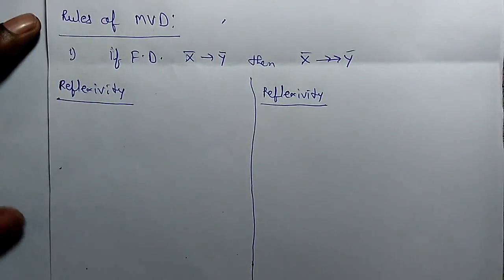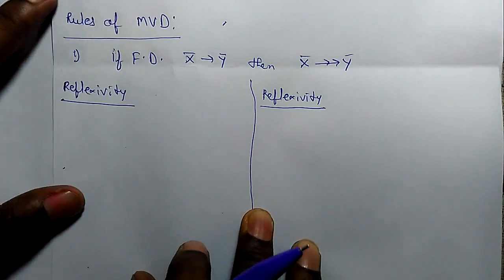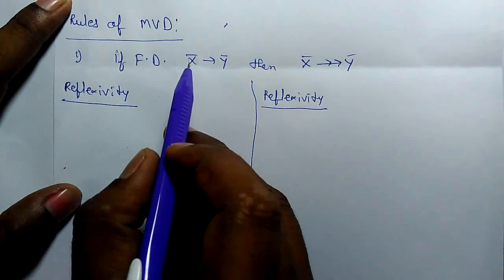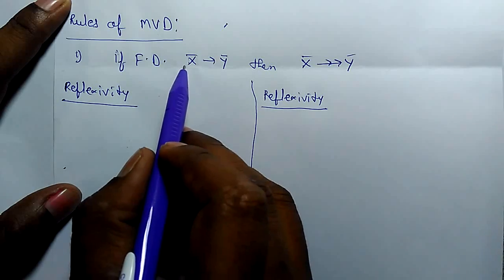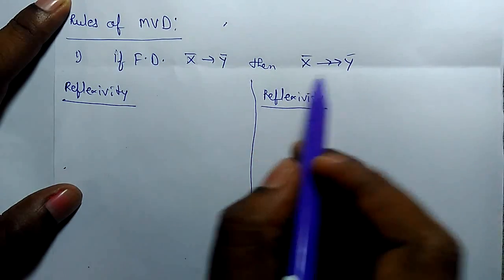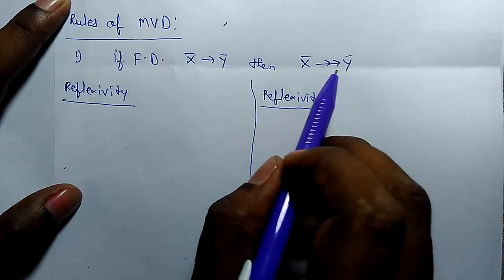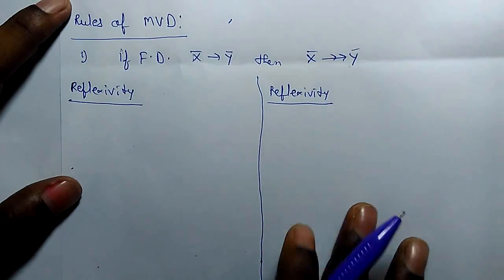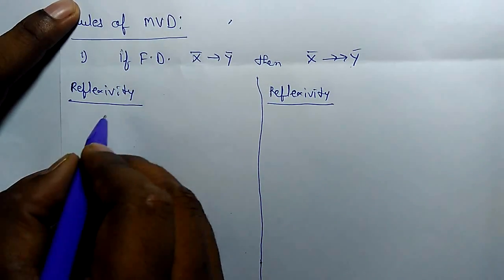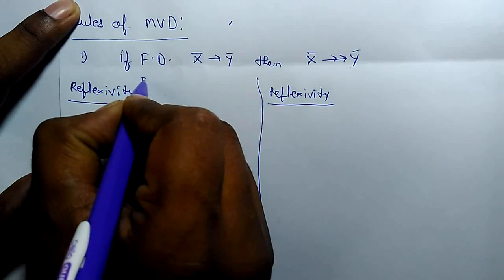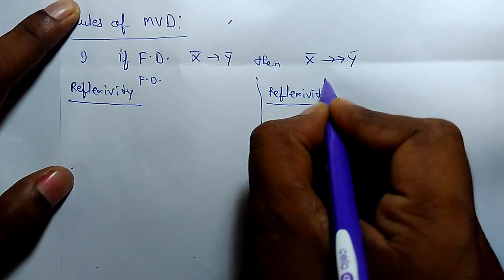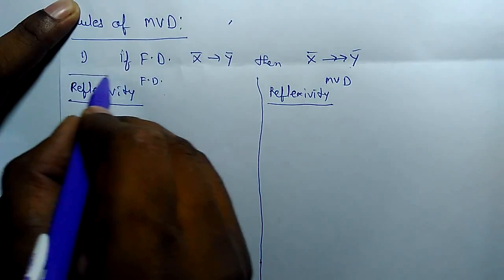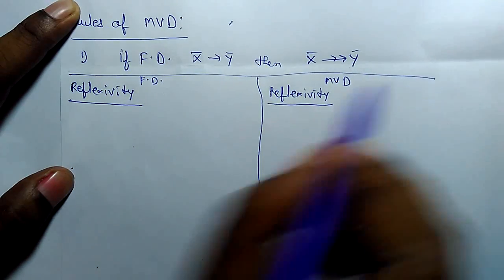The rules of multivalue dependency: for any functional dependency in relation R, if X functionally determines Y, then X also multivalue determines Y. The second rule is reflexivity. In both functional dependency and multivalue dependency, let's check how exactly they are related to each other.